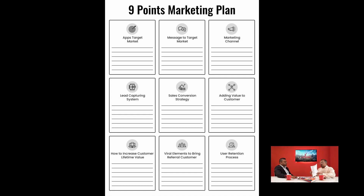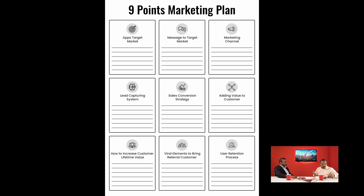There is a certain strategy you have to follow. In this book we discuss a nine-point marketing plan. The nine points are: app target market, message to the target market, marketing channel, lead capturing system, sales conversion strategy, adding value to the customer, how to increase customer lifetime value, viral element to bring referral customers, and user retention process.